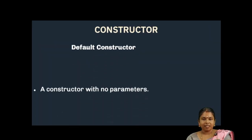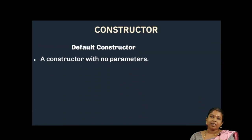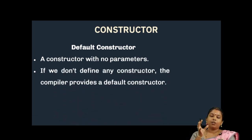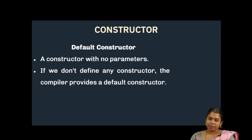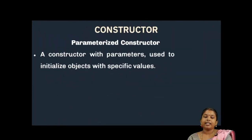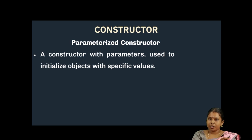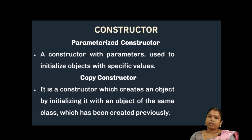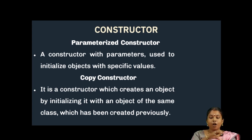The Default Constructor is a Constructor with no parameters. If we don't define any Constructor in our program, the compiler will automatically invoke this Default Constructor. The Parameterized Constructor is a Constructor with parameters, which is used to initialize instances of the object with specified values. The Copy Constructor creates an object by initializing it with an object of the same class that has already been created.